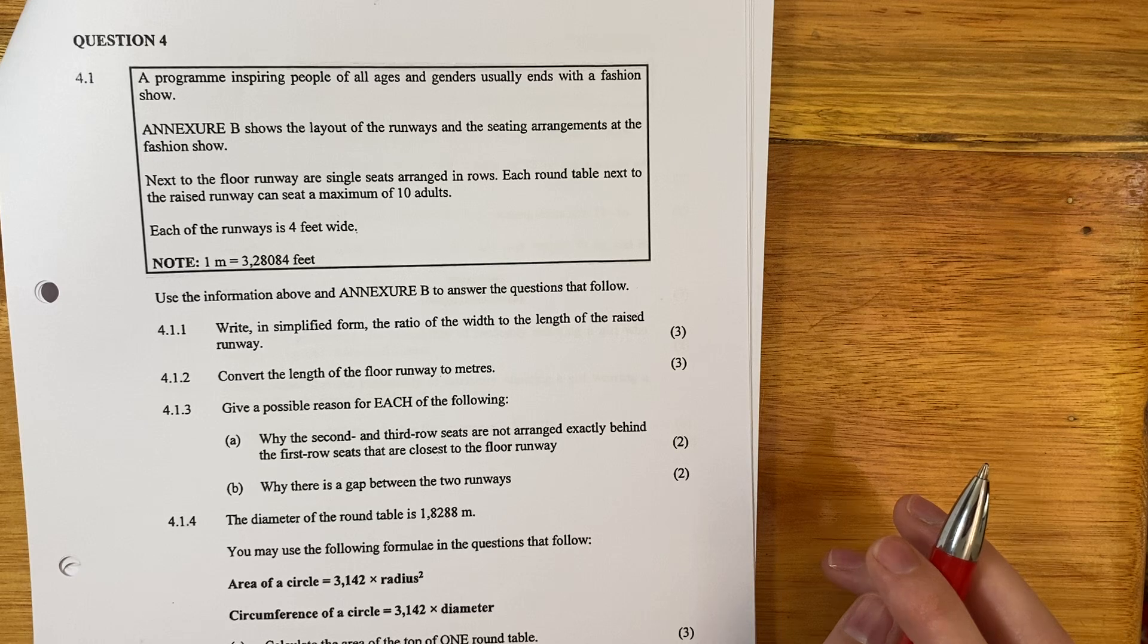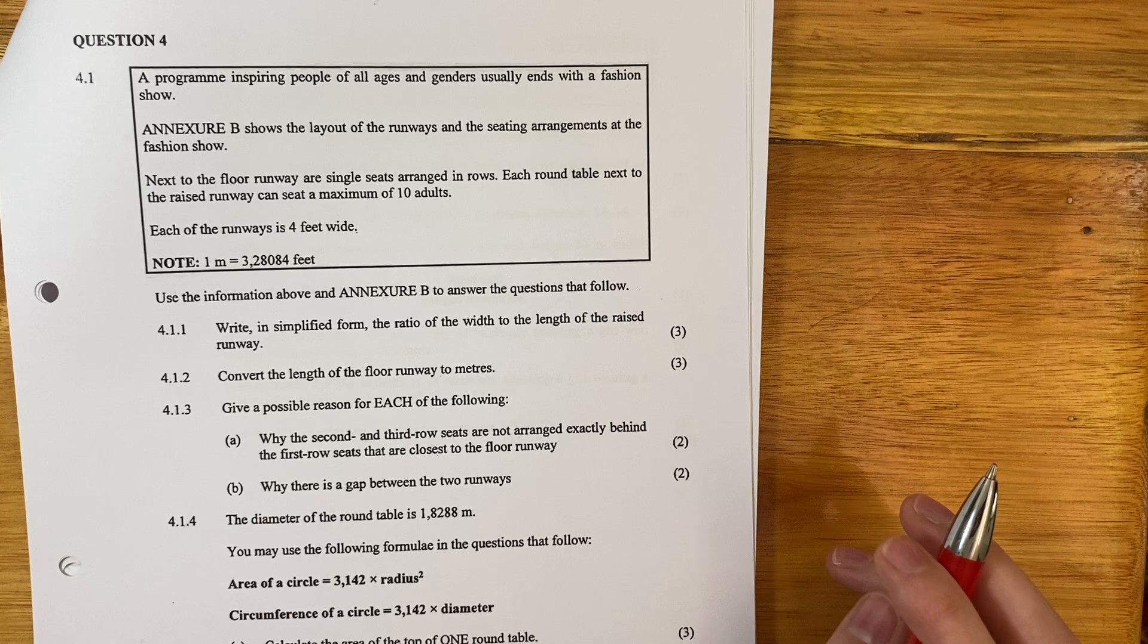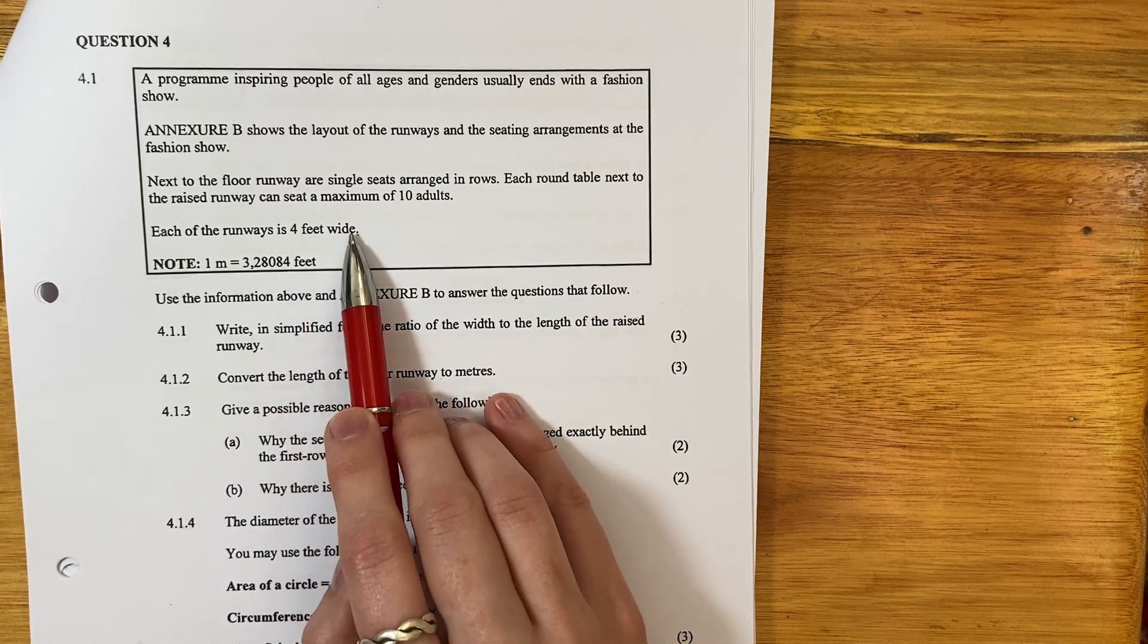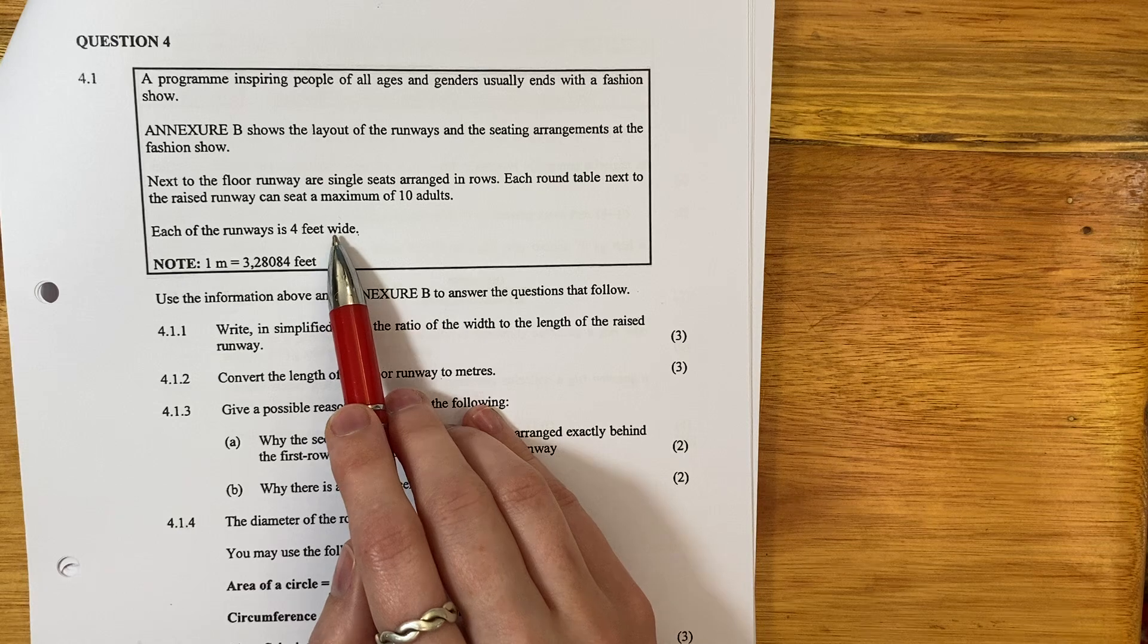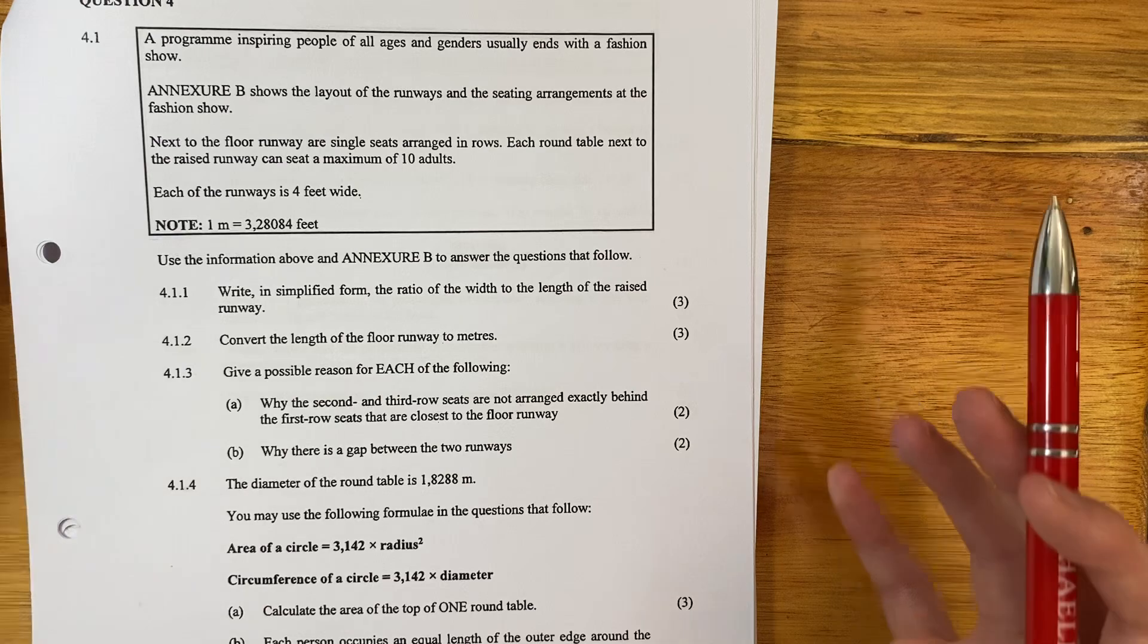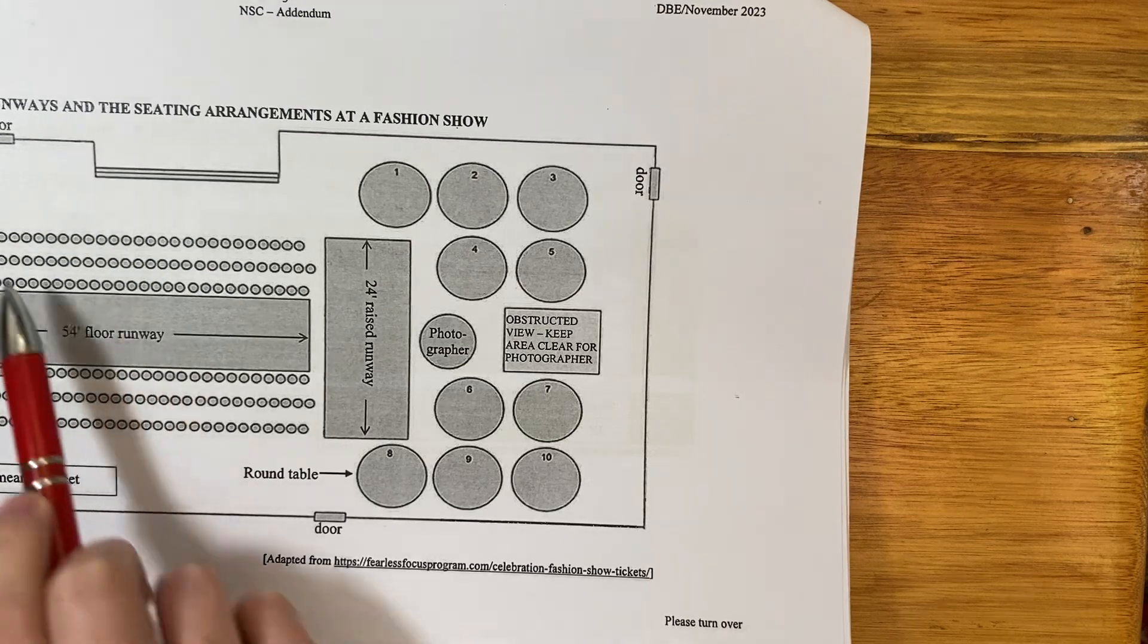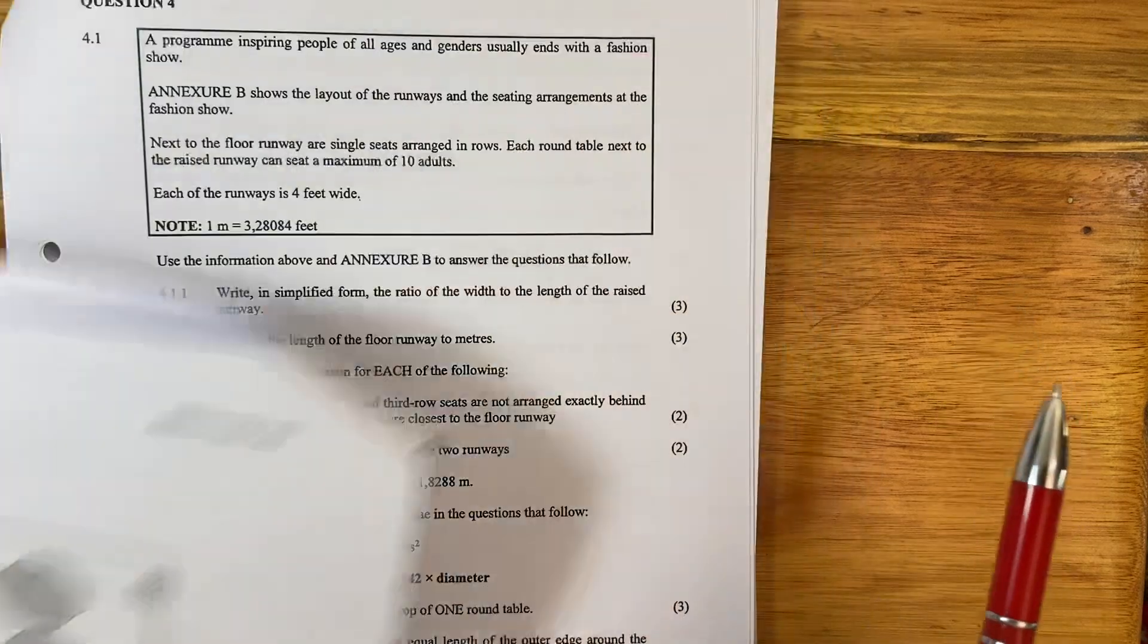Next to the floor runway are single seats arranged in rows. Each round table next to the raised runway can seat a maximum of 10 adults. Each of the runways is four feet wide. Here's the layout. There's my tables, the raised runway, the floor runway, and these are seats. We're going to take this one step at a time.